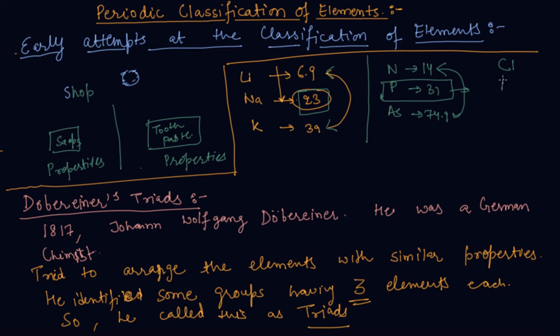One more is Cl, Br, iodine. The atomic mass of this is 35.5, this is 79.9 and this is 126.9. Students, these are the triads which Döbereiner gave us.